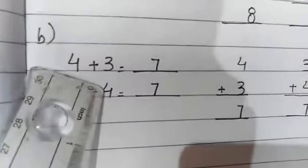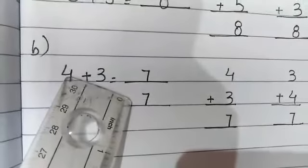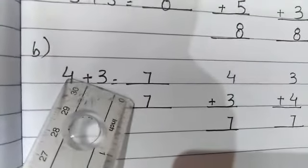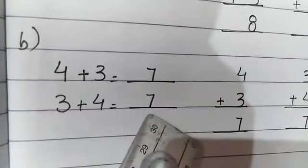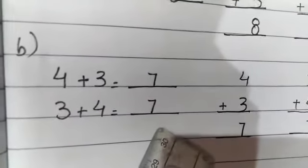Next question. 4 plus 3. 4 in your mind, 3 fingers out. 4, 5, 6, 7. Answer is 7. The number places are changed. Answer is 7. 3 plus 4. Answer is 7.